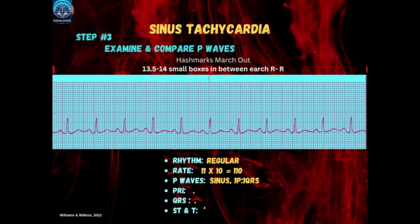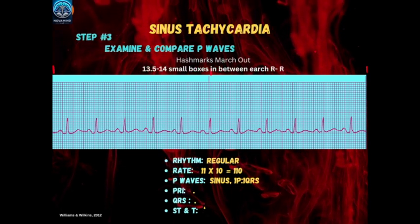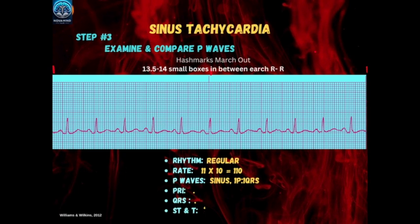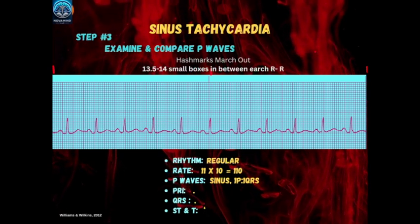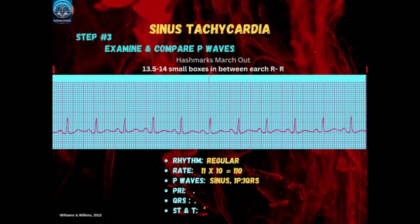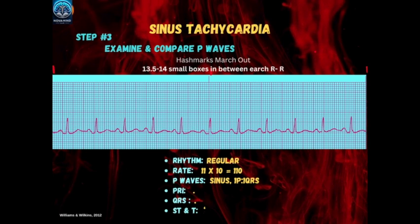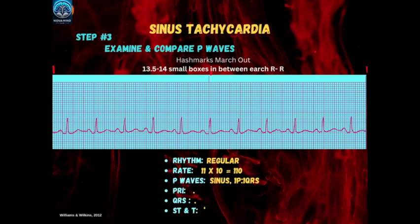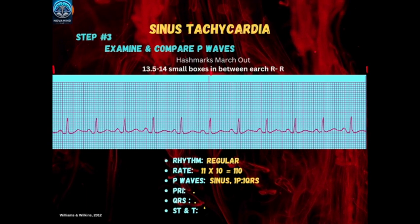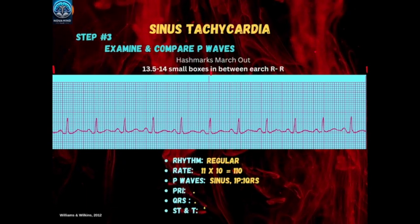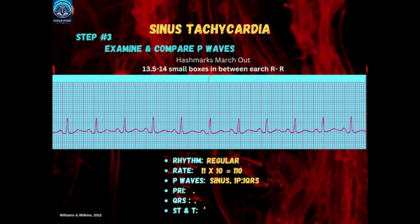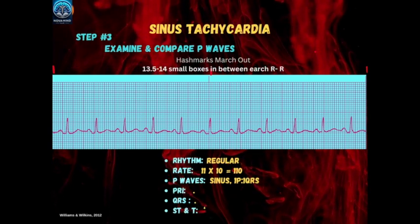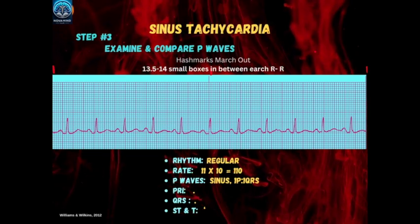In step 3, we examine and compare all P waves. The P waves in the strip are upright and positive in lead 2, which is a hallmark of normal electrical conduction originating from the SA node. The P waves are smooth, rounded, and maintain a uniform shape throughout the entire ECG strip. This uniformity indicates that the electrical signals are consistently generated by the SA node. In sinus tachycardia, just like in normal sinus rhythm, each P wave is followed by a QRS complex, confirming proper conduction from the SA node. The P waves are confirmed to be sinus P waves, indicating the rhythm is being driven by the SA node.